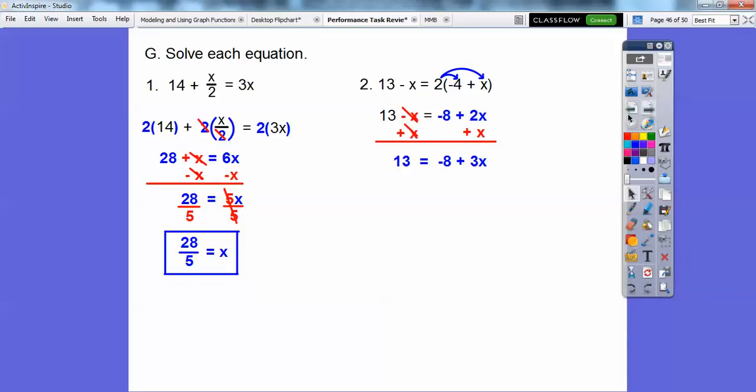Okay, and then they cancel. And we get 2x plus x is 3x. And now I'm going to get rid of this negative 8. So we're going to go plus 8 by the addition property. Plus 8, plus 8. We get 21. Then divide by 3. We get x equals 7 right there.